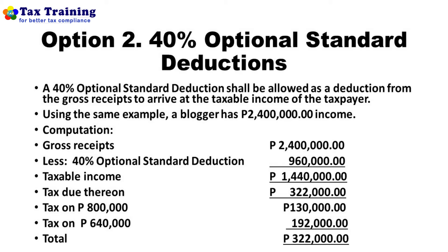Option 2 is the forty percent optional standard deduction. A forty percent optional standard deduction shall be allowed as a deduction from gross receipts to arrive at taxable income. Using the same example of two million four hundred thousand in gross receipts, less forty percent optional standard deduction of nine hundred sixty thousand, the taxable income is one million four hundred forty thousand. The tax due is three hundred twenty-two thousand, computed by applying the graduated rates under the TRAIN Law: one hundred thirty thousand on the first eight hundred thousand, plus one hundred ninety-two thousand on the remaining six hundred forty thousand.